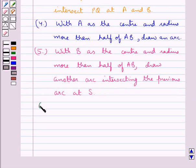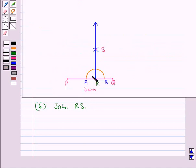In the next step we join RS. So we have joined RS and we get RS perpendicular to PQ.